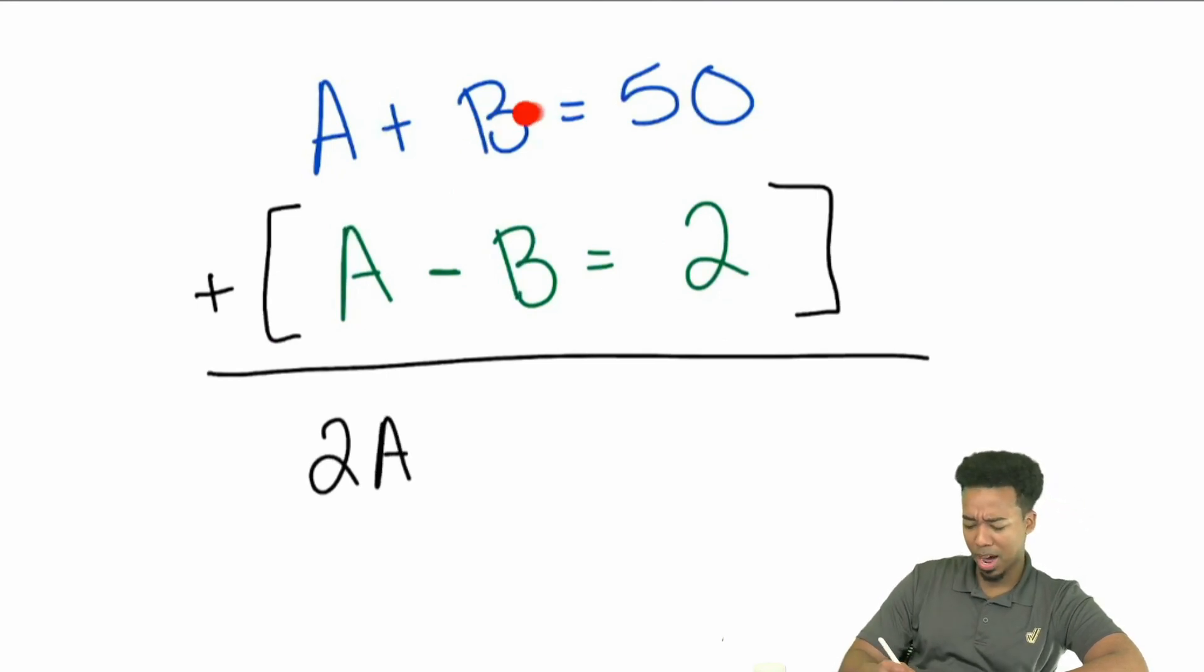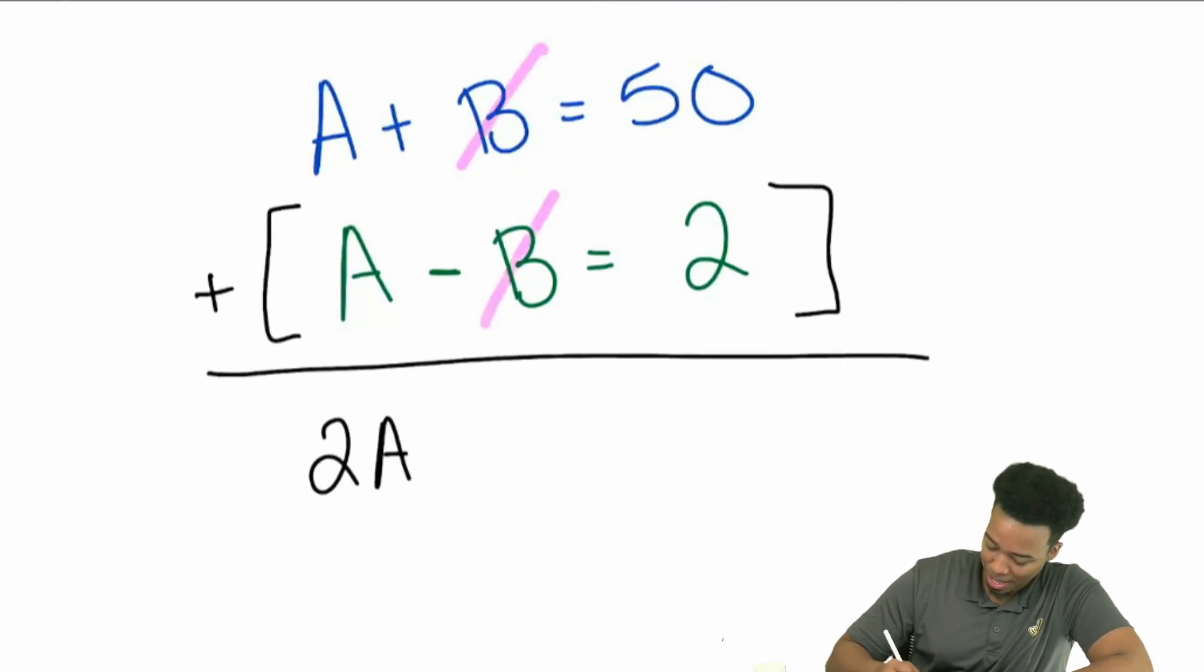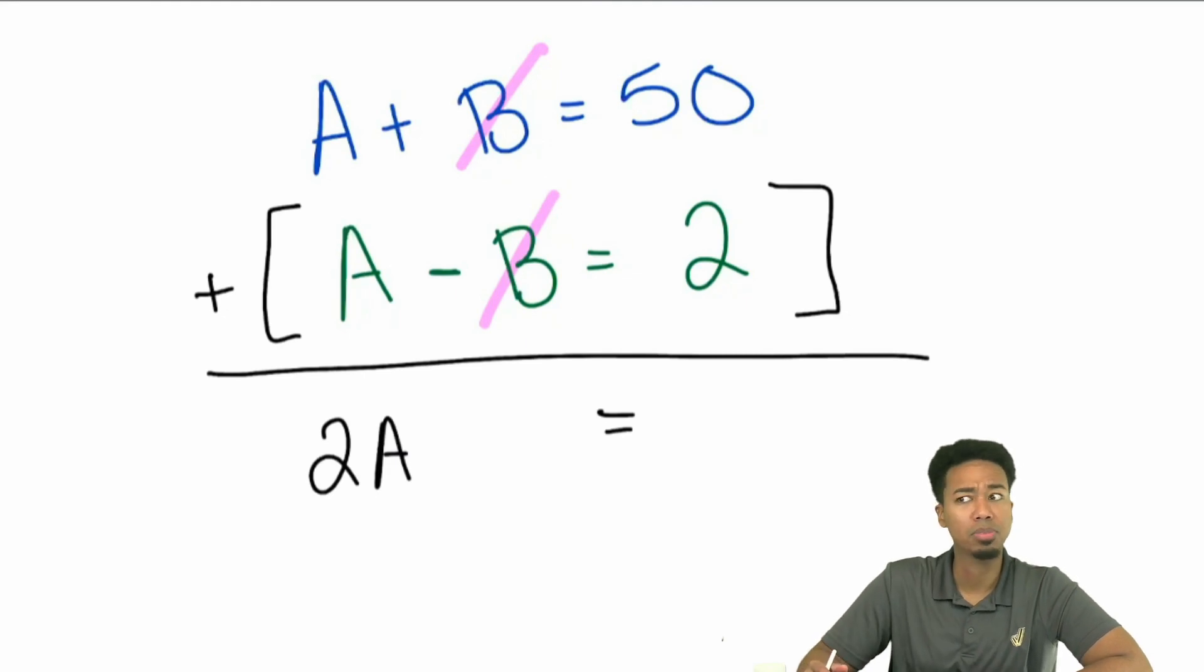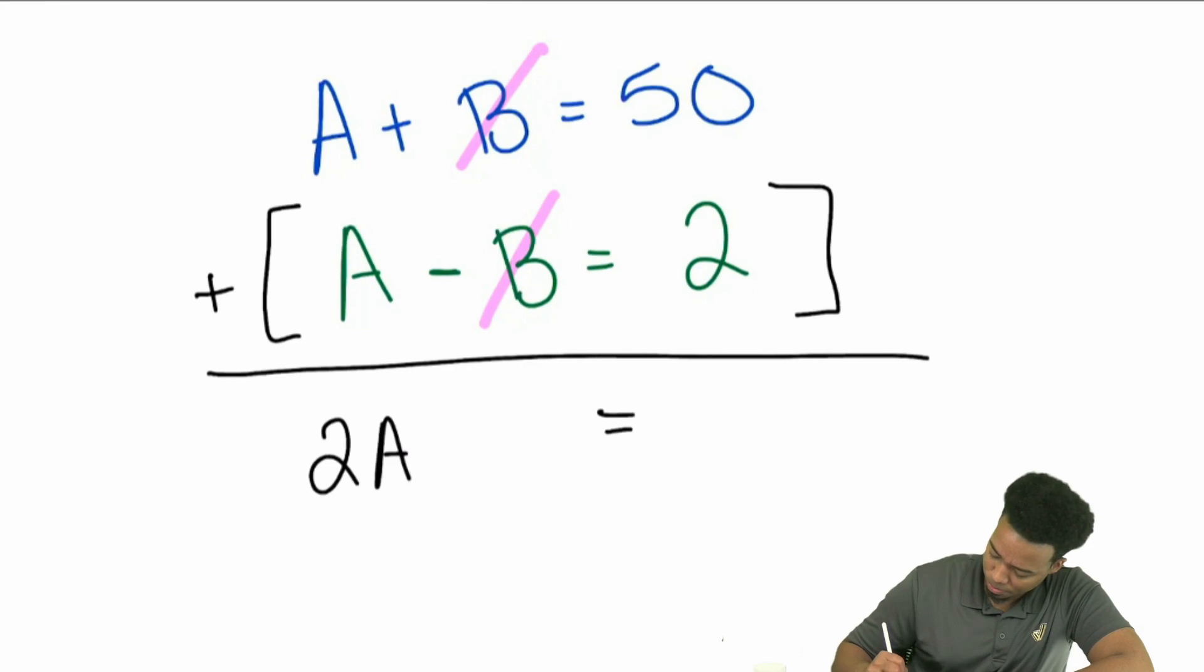Okay. What's going to happen if we have a positive B minus B? What's B minus B going to be? Yeah, it's going to cancel out. It's going to cancel out. And then what's left is, well, what's 50 plus 2? 52.